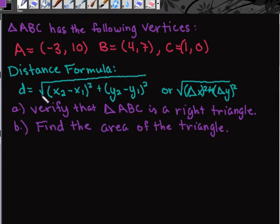We are going to use the distance formula to find the length of each side, then use the Pythagorean theorem to verify that triangle ABC is a right triangle, and finally find the area of the triangle.